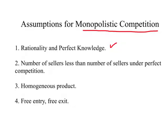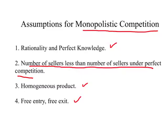The big difference between monopolistic competition and perfect competition is that the number of sellers under monopolistic competition is less than the number of sellers under perfect competition. The third assumption is still the same as perfect competition: homogeneous product, meaning different sellers sell exactly the same product. Then we have the assumption of free entry and free exit. When the number of sellers is less, we have imperfect competition.